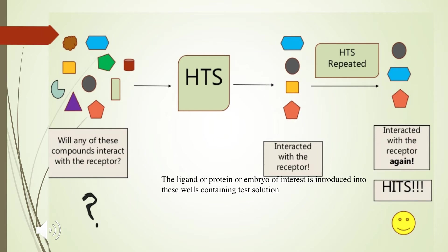From a large group of compounds, we have to check whether those compounds interact with our receptors or not — that is why we do HTS. In HTS, compounds interact with the ligands, proteins, or embryos of interest. Whatever is interacting with our receptor is separated in the primary screen. Then we repeat the process again to check whether they are interacting with the receptor. If they again interact, they are confirmed as HITs. From these HIT molecules, we will select the lead molecules.